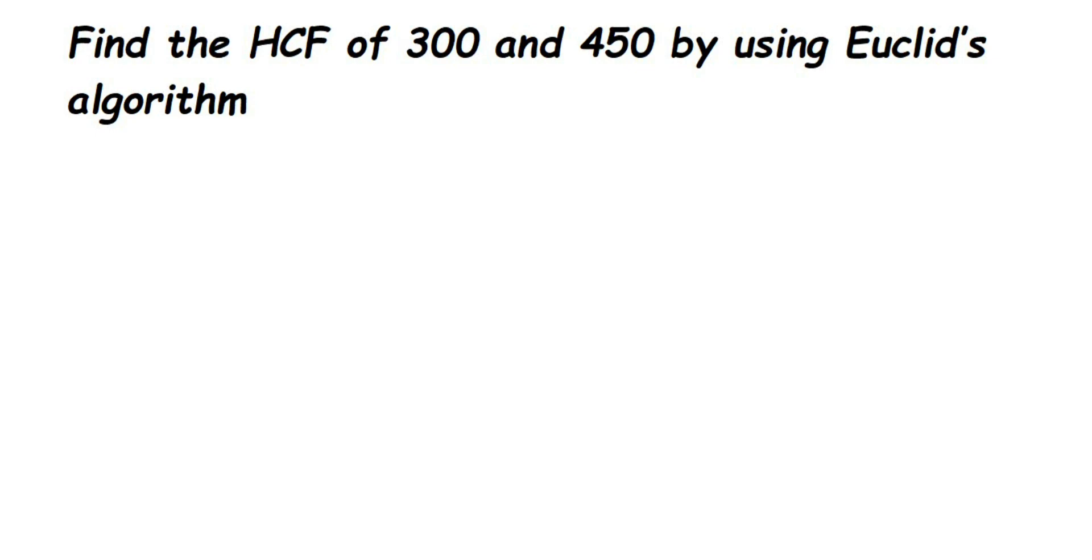Hey everyone, here we have a question on HCF but the method is a little different. The question is find the HCF of 300 and 450 by Euclid's algorithm. It's also sometimes called Euclid's division, and the method is the same for both.